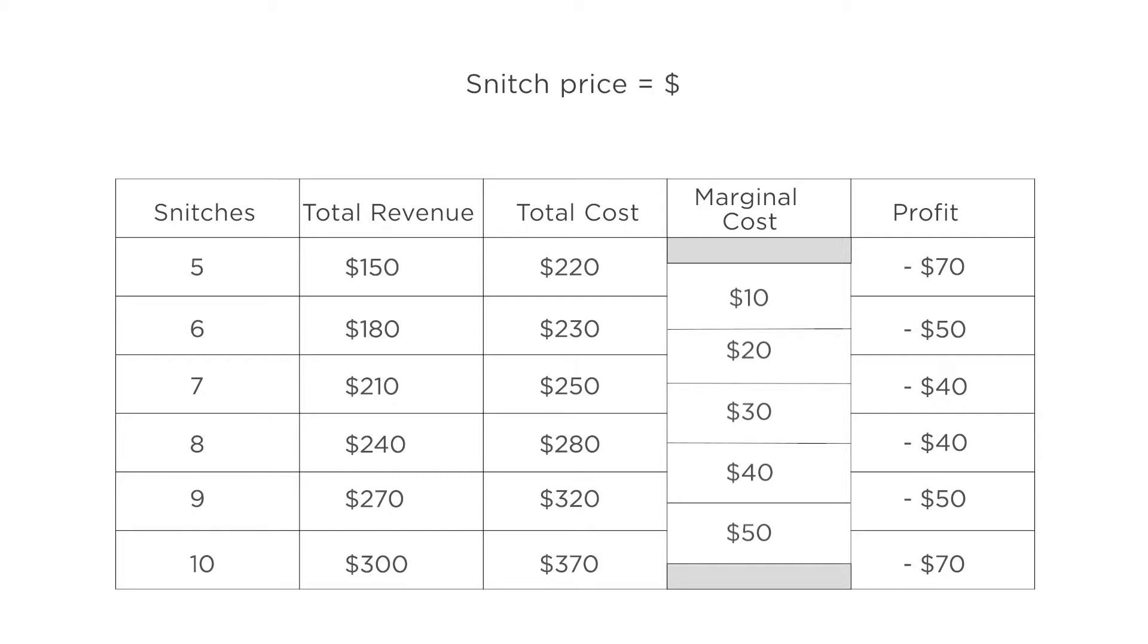If the price of a snitch is $30, the firm still maximizes profits by producing 8 snitches. But it is losing $40 at this production level. This doesn't sound like a very good deal for the snitch maker.